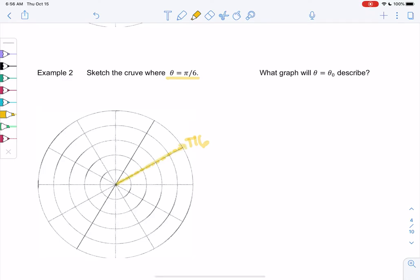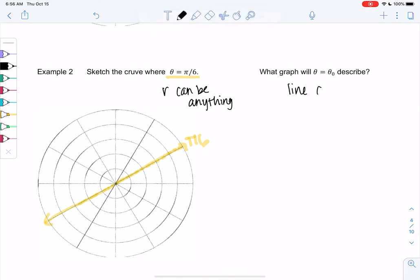We may remember those negative radiuses get reflected to the other side, so it actually includes this angle as well. That is when we have theta equals an angle. So theta equals theta_0 will be a line at that angle, sometimes it's called a radial line.